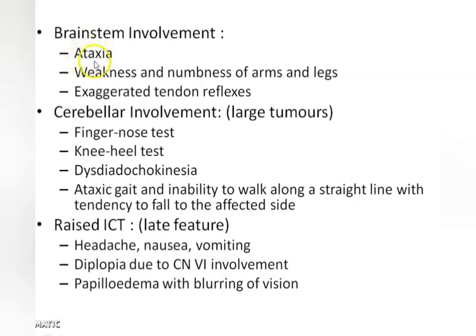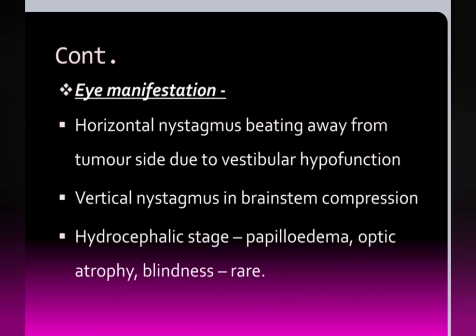As the tumour grows it will involve the brainstem, leading to ataxia and upper motor neuron types of paralysis. Cerebellar involvement leads to abnormalities on cerebellar function testing. As the tumour grows intracranially you will have signs of raised intracranial pressure. There are also typical signs such as nystagmus, and once intracranial pressure increases it leads to papilloedema as well.